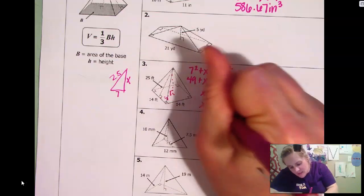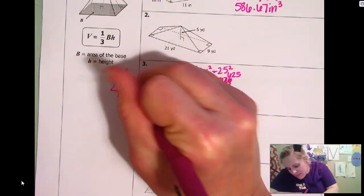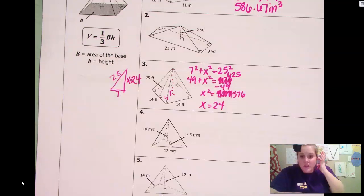Sorry. Sorry. I was trying to use my key and speed things up and I looked at the wrong thing. So 25 squared is 625. And then you subtract 49. That's what's going to give you 576. The square root of 576 is 24. Okay. Perfect. So the height of my pyramid is 24. All right.